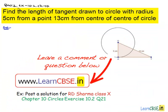Now, let us discuss question number second from exercise 10.2 chapter 10. Find the length of tangent drawn to a circle with radius 5 cm from a point 13 cm from the center of the circle.